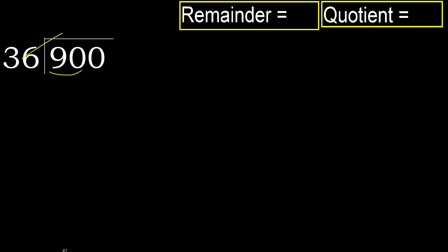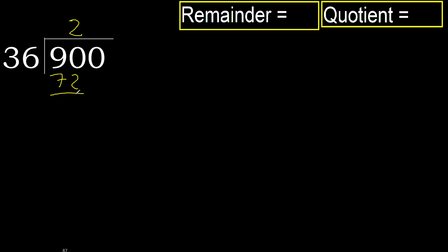36 multiplied by which number is nearest to 90 but not greater? 36 multiplied by 3 is greater. Multiplied by 2: 72 is not greater. Subtract: 90 minus 72 is 18.